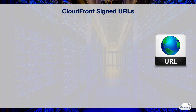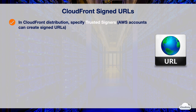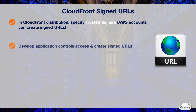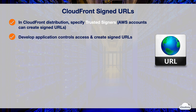CloudFront signed URLs allow you to control who can access your content and serve content through CloudFront. Here's how signed URLs work. In the CloudFront distribution, you need to specify AWS accounts as trusted signers, which you want to assign permission to create signed URLs. You need to develop your application to determine whether a user should have access to the content, and to create signed URLs for the files or parts of your application that you want to restrict access to.